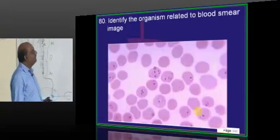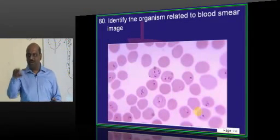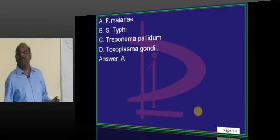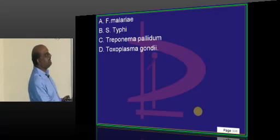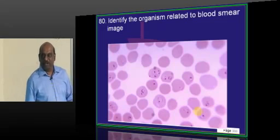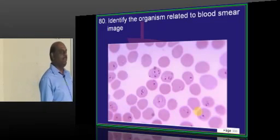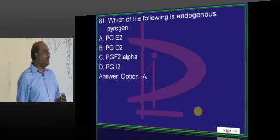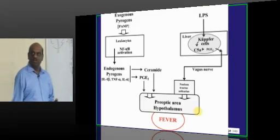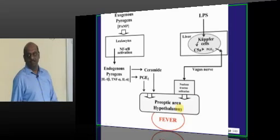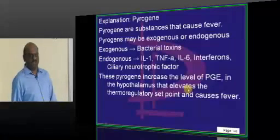What is this organism with a ring form? Ring forms are typically seen in Plasmodium malaria. If you answer this image-based question wrong, it is completely inexcusable — this is expected at least. Endogenous pyrogen is PGE2, which typically leads to development of fever by acting on the preoptic area in the hypothalamus.